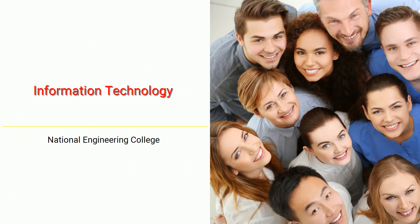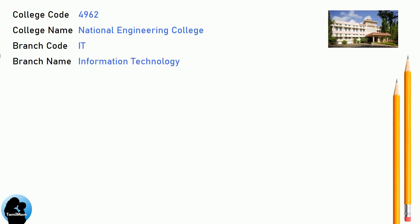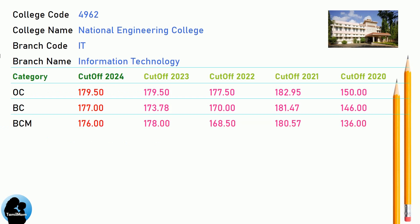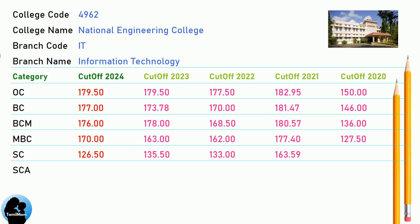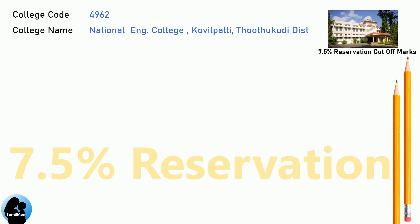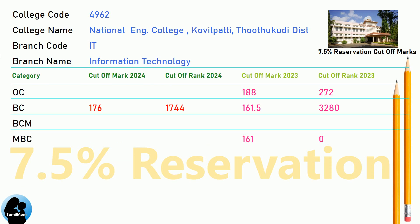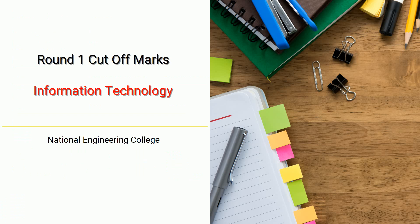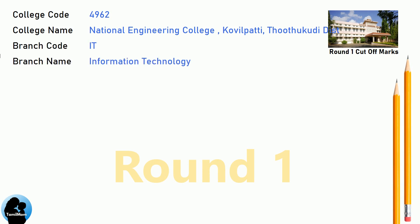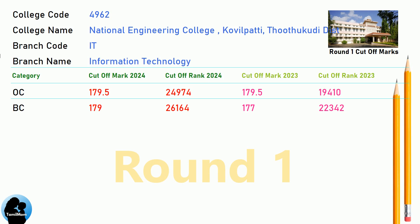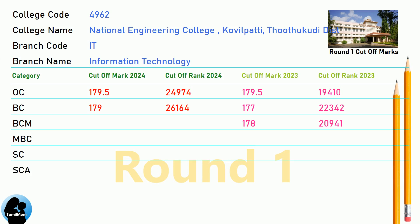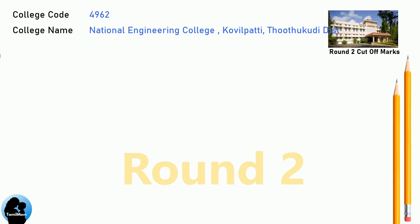DNA cut-off for National Engineering College in Information Technology. DNA 7.5 Reservation cut-off for National Engineering College in Information Technology. DNA Round 1 cut-off for National Engineering College in Information Technology. DNA Round 2 cut-off for National Engineering College in Information Technology.